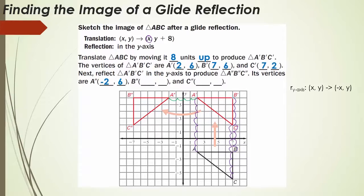Looking at B': it is 7 points away from the line of reflection, so B'' is located at negative 7 and 6. Remember, the X value has to be its opposite — if it was positive, it becomes negative. Finally, C'': looking at C', it is 7 units from the Y-axis, so C'' is located at X equals negative 7 and Y equals 2. That works with our algebraic method as well.